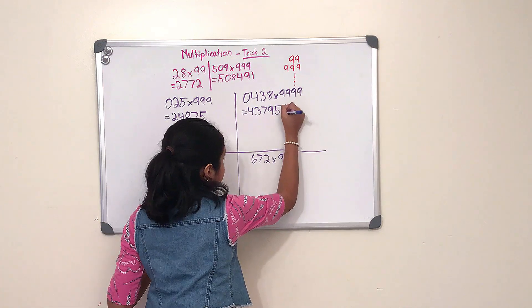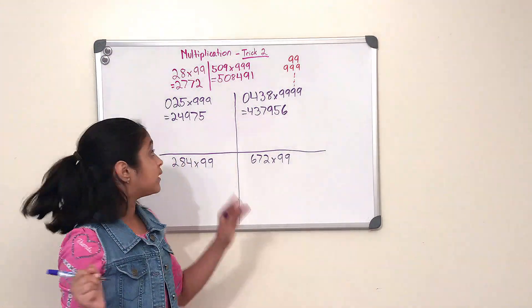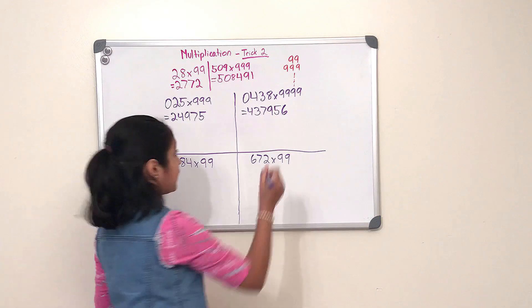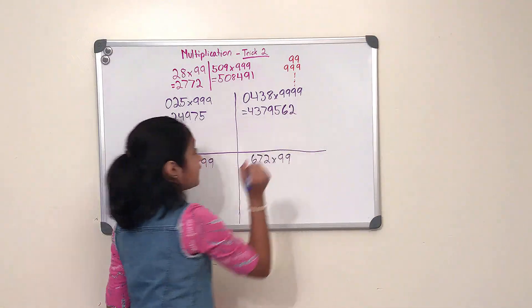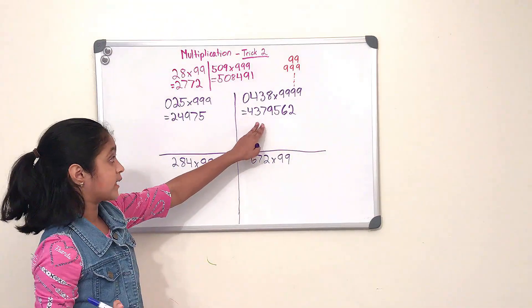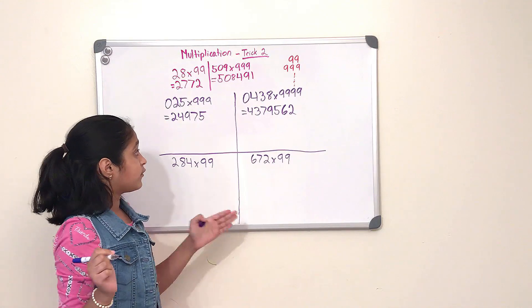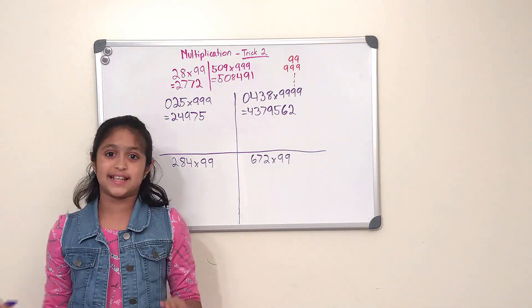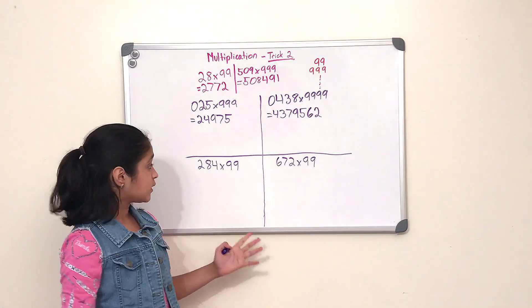And last one from ten, which is ten minus eight, and that is two. And guess what? This is our product, and which is 437,962.